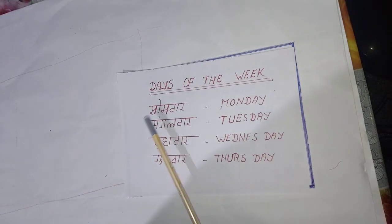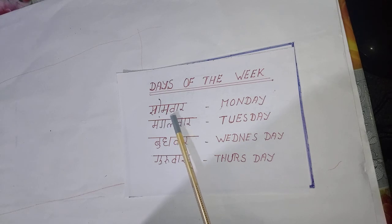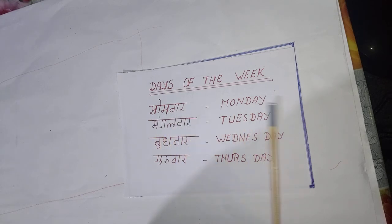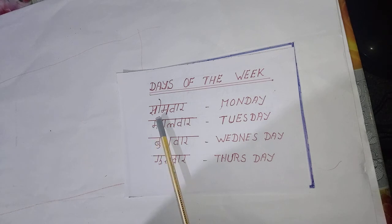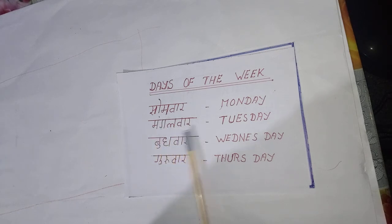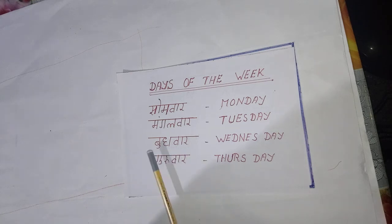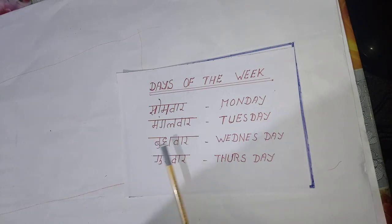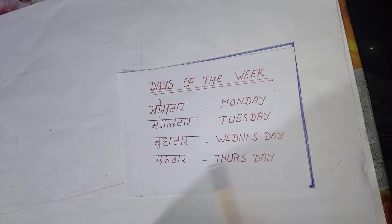Now here you see — som war: sa, so, ma, va, ra — som war, Monday. Mangal war: ma, yi, ga, la — mangal war, Tuesday. Buddu war: ba, boo, idh, budd — buddu war, Wednesday.